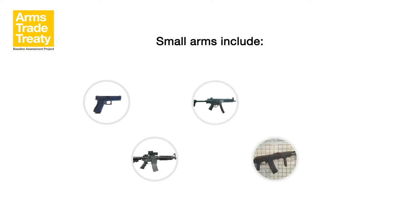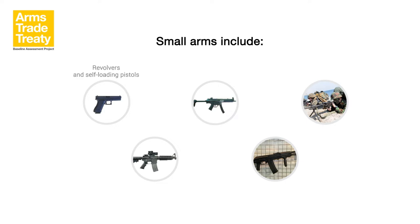Small arms are, broadly speaking, weapons designed for individual use. They include, inter alia, revolvers and self-loading pistols, rifles and carbines, submachine guns, assault rifles and light machine guns.